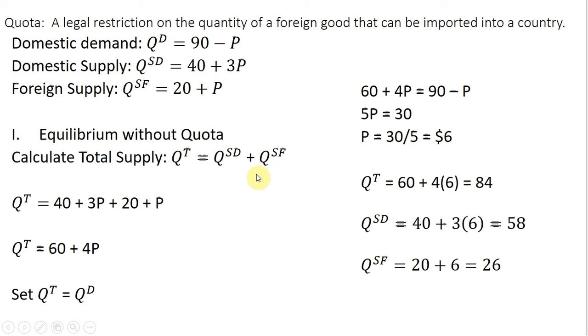For Q^SF, the supply from foreigners, it's plus 20 + P. So 40 plus 20 is 60. 3P plus P is 4P.